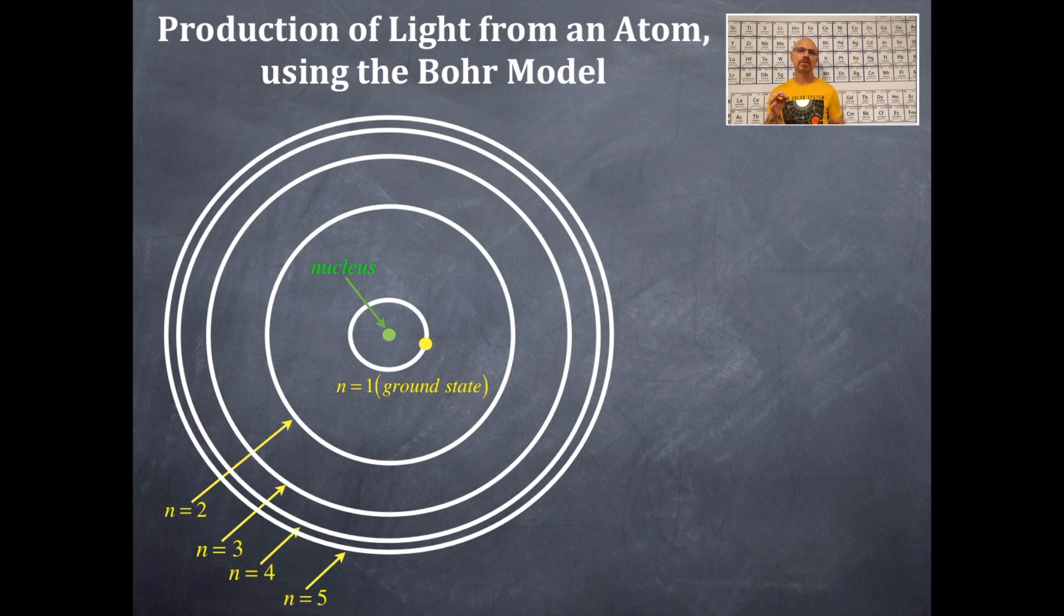And the n equals 1, n equals 2, n equals 3, n equals 4, n equals 5. As you go farther from the nucleus, the numbers increase in whole numbers. Also, I want you to notice something else. As the numbers increase, the n increases, then the distance between the n's decreases the farther you go out.